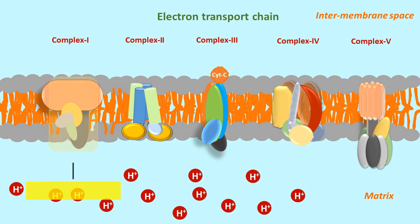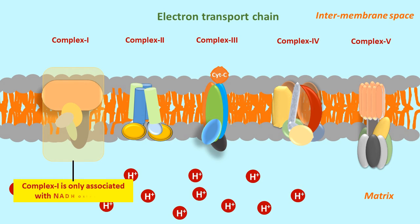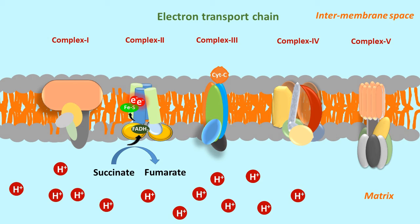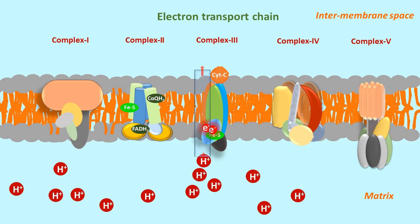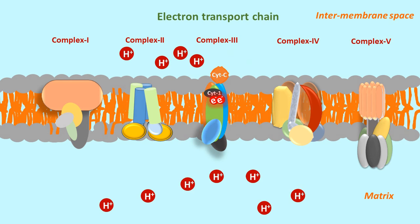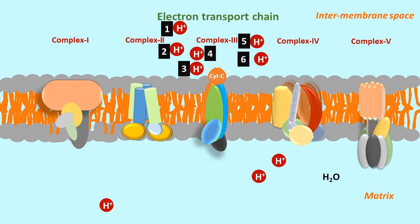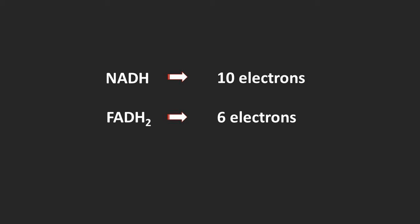For reduced FADH2 molecules, Complex 1 is skipped, while Complex 2 — succinate coenzyme Q reductase — is in action. The enzyme succinate dehydrogenase, which catalyzes conversion of succinate to fumarate, is an integral component of Complex 2. This is the citric acid cycle reaction that reduces FAD into FADH2. The 2 electrons are donated to the iron-sulfur cluster of Complex 2 and finally transferred to coenzyme Q, then on to Complex 3. All other reactions are the same as for NADH: 4 protons are pumped in Complex 3 and 2 in Complex 4. Since Complex 1 is not involved, a total of only 6 protons are pumped in FADH2 oxidation — 4 fewer than in NADH oxidation.